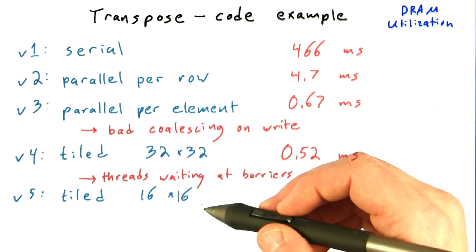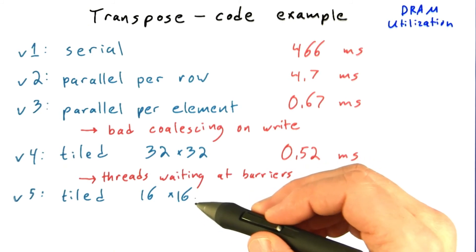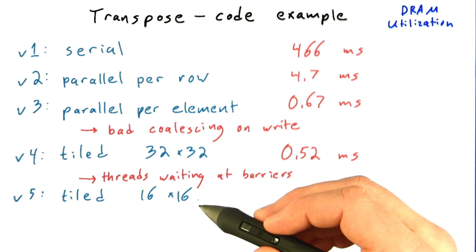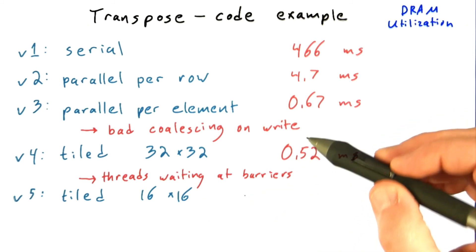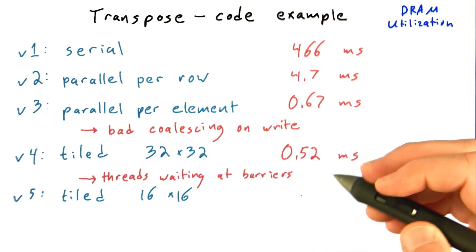So we improved that by shrinking the tile size. Experimenting with different tile sizes led us to conclude that a 16 by 16 thread block writing into a 16 by 16 tile in shared memory struck a good balance between achieving coalesced writes, reads and writes to memory, and not spending too much time waiting at barriers.